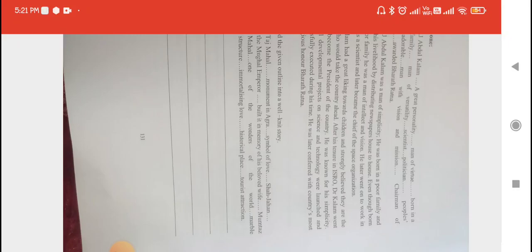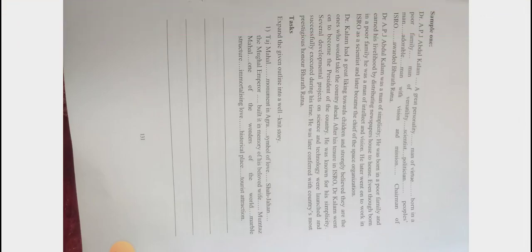For example, hints are given: Abdul Kalam — a great personality, a man of virtue, born in a family, man of versatility, scientist, politician, people's man, adorable man with vision and mission, chairman of ISRO, awarded Bharat Ratna. You need to expand like this: 'Dr. A.P.J. Abdul Kalam was a man of simplicity. He was born in a poor family and earned his livelihood by distributing newspapers house to house. Even though born in a poor family, he was a man of intellect and vision. He later went on to work in ISRO as a scientist and later became the chief of the space organization. Dr. Kalam had a great liking towards children and strongly believed that they are the ones who would take the country ahead. After his tenure in ISRO, Dr. Kalam went on to become the President of the country. He was known for his simplicity. Several development projects on science and technology were launched and successfully executed during his time, and he was later conferred with the country's most prestigious honour, Bharat Ratna.'